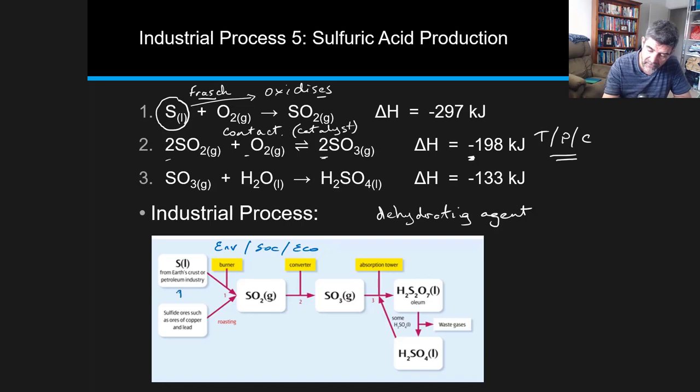So the first thing we've got to do is get the sulfur out of the ground. This is a nice little visual learning aid from Nelson that I thought would be quite useful just to give you a bit of an overview of the actual production process for sulfuric acid. So we start with our sulfur which we've extracted from the earth's crust and that can be done either through smelting of ores or it can also be done through the Frasch process as I talked about earlier.